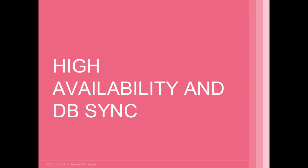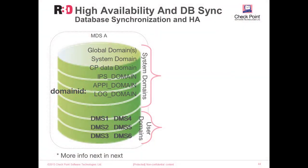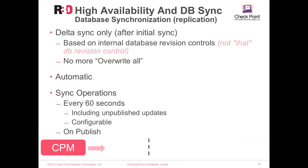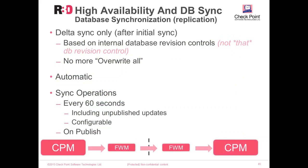In the second part of the first chapter, we're going to talk about high availability and database sync. When configuring an MDS server for high availability, the PostgreSQL database domains are copied over to the secondary MDS server. When establishing sync between the primary and secondary multi-domain servers, everything starts with a full sync — copying all information across all domains to the secondary MDS. After the initial full sync, only delta changes are synced, based on internal database revision controls. There is no overwrite-all anymore, which means the amount of data sent from primary to secondary is much smaller.